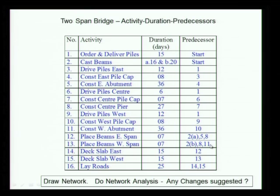My beam should be available, the east abutment should be ready, and the center pier should be ready. For the west span, my beam should be available with the center pier and west abutment. Deck slab east is based on the east beams; west is based on the beams in the west. Then layer roads after the east and west deck slabs are done. This is a finish-start relationship predecessor.